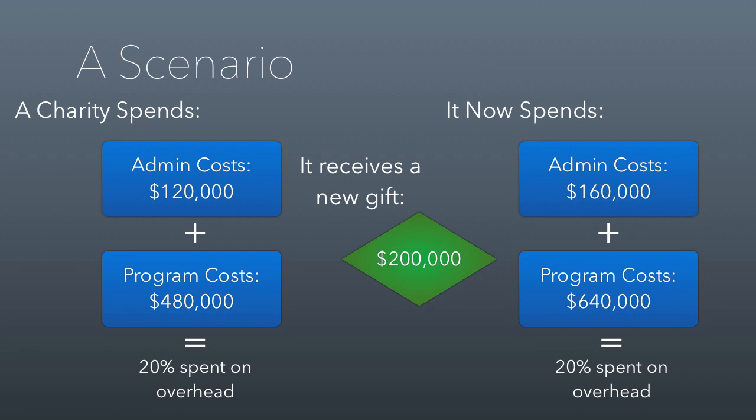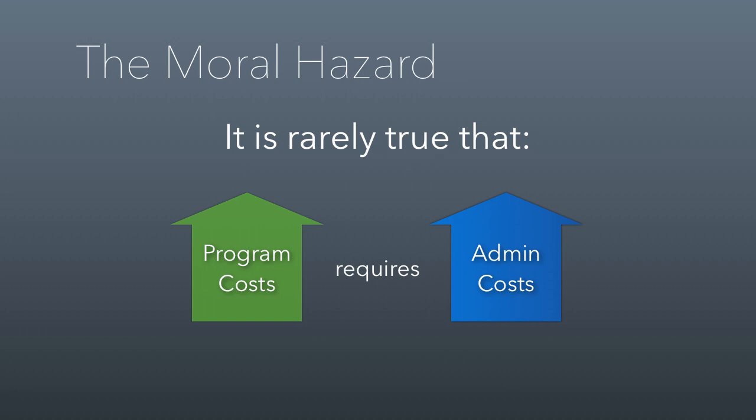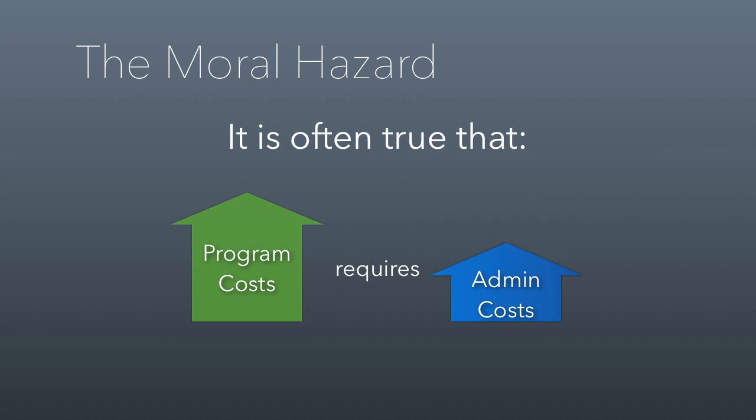They still have the same overhead ratio. But there's an important point to make here, which is that new money for a non-profit does not necessarily mean that their program ratio should stay the same. In fact, the odds are their program ratio should change as a result of new money. It's rarely true that an increase in program costs requires an equal increase in admin costs.